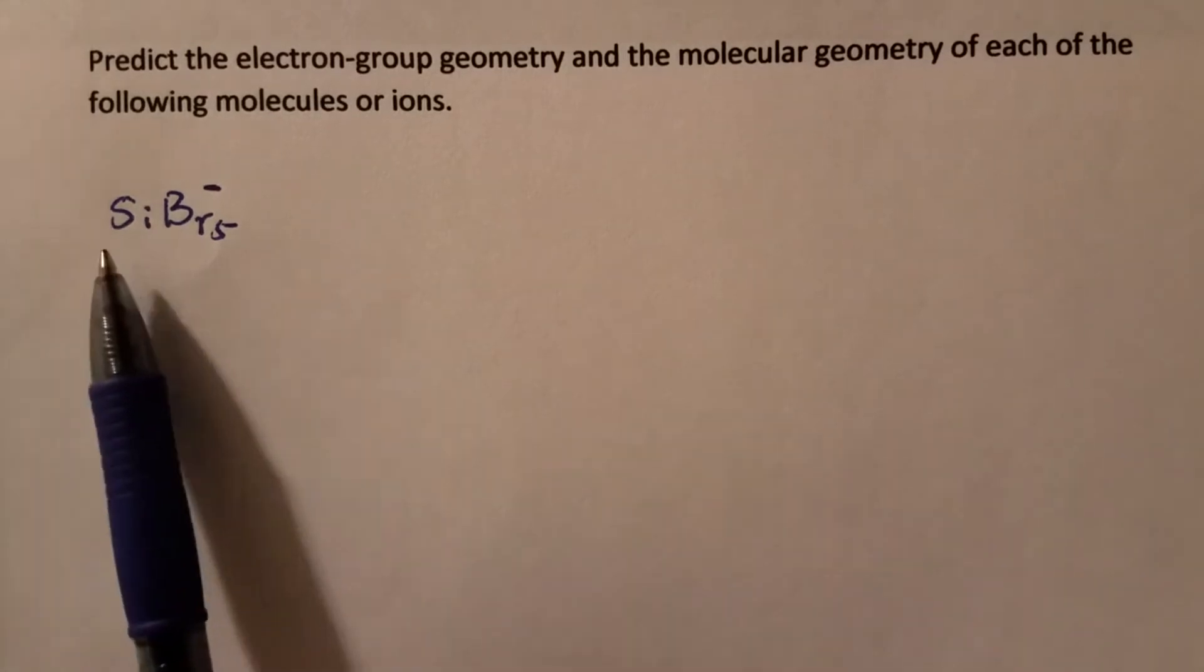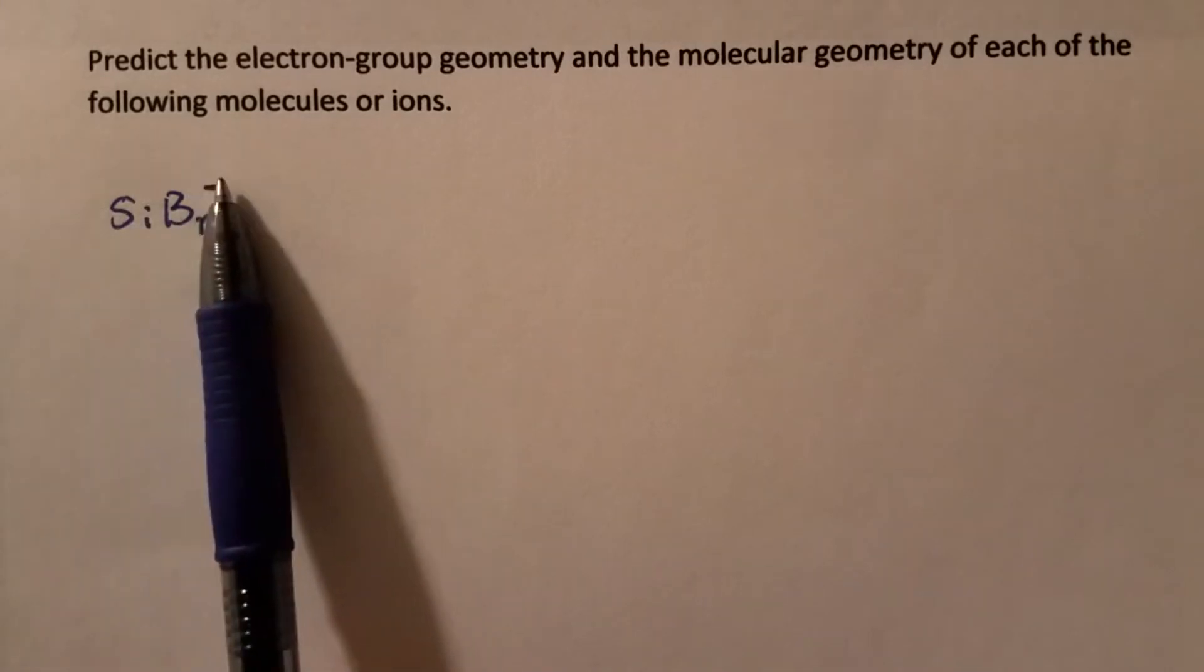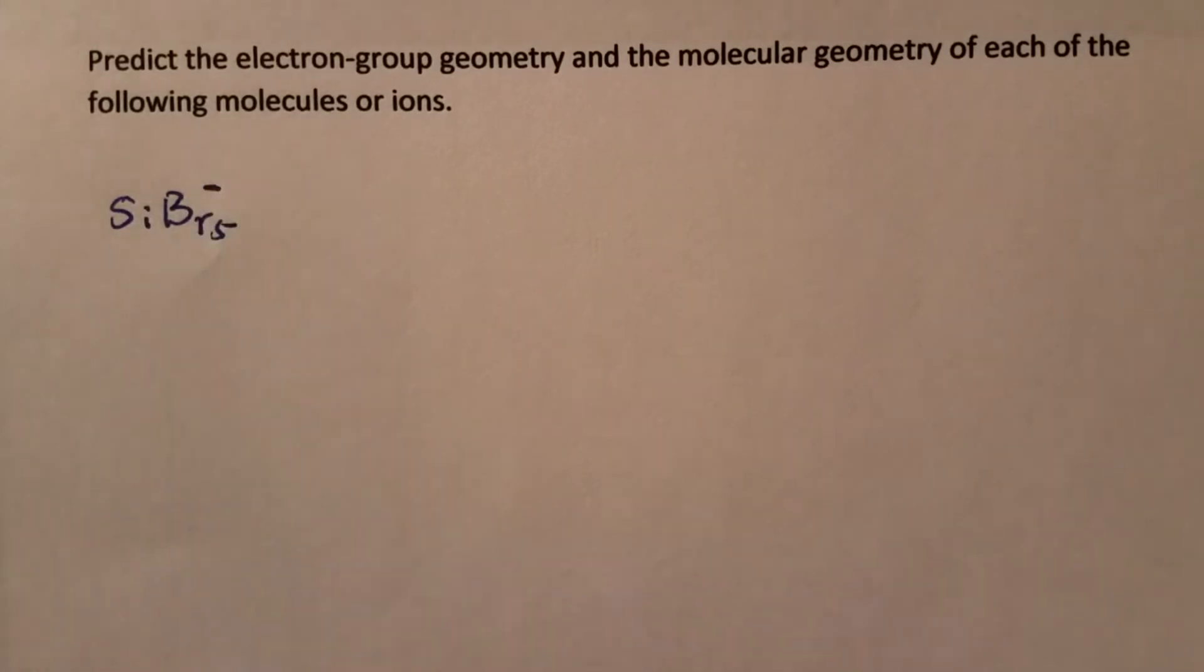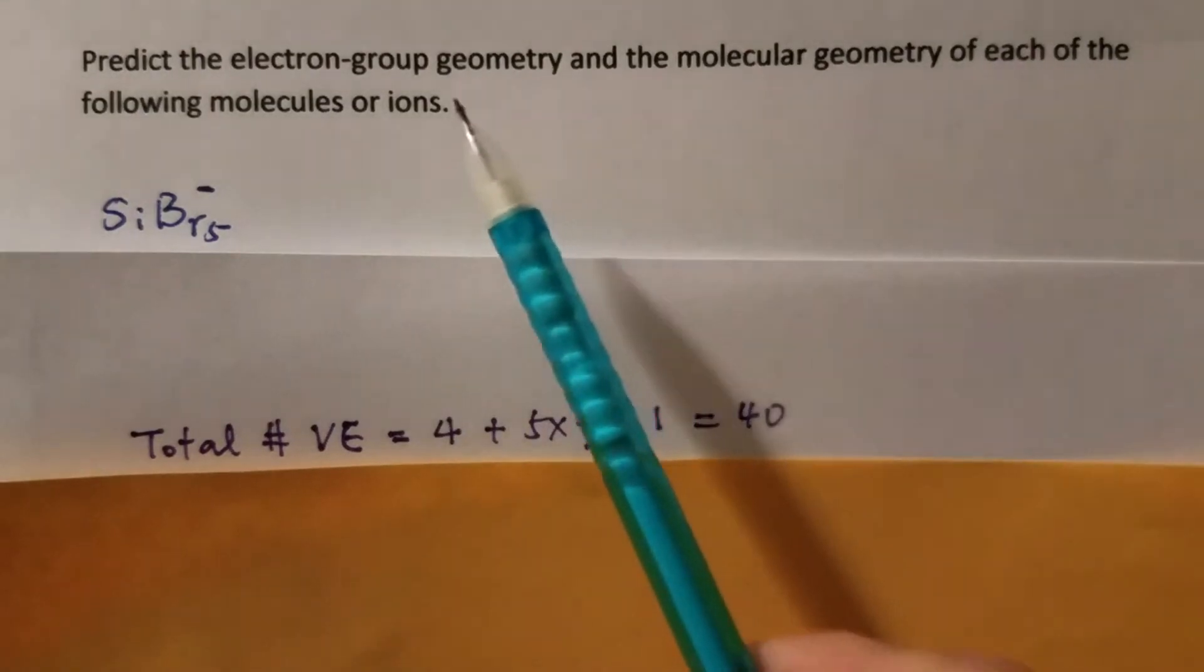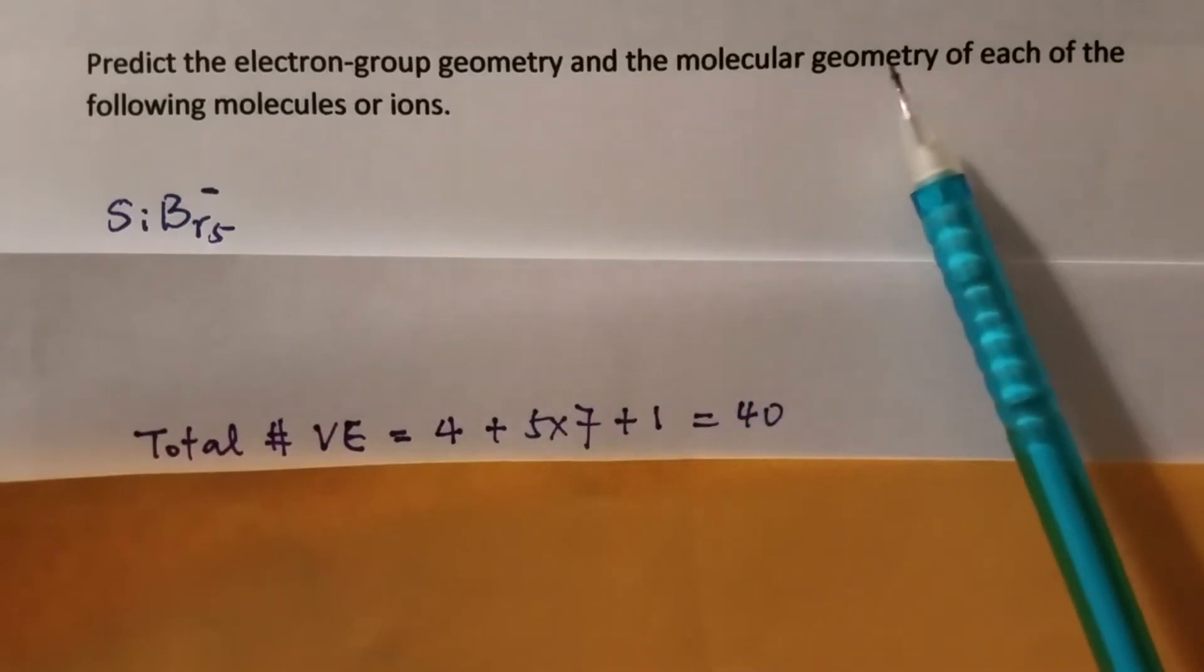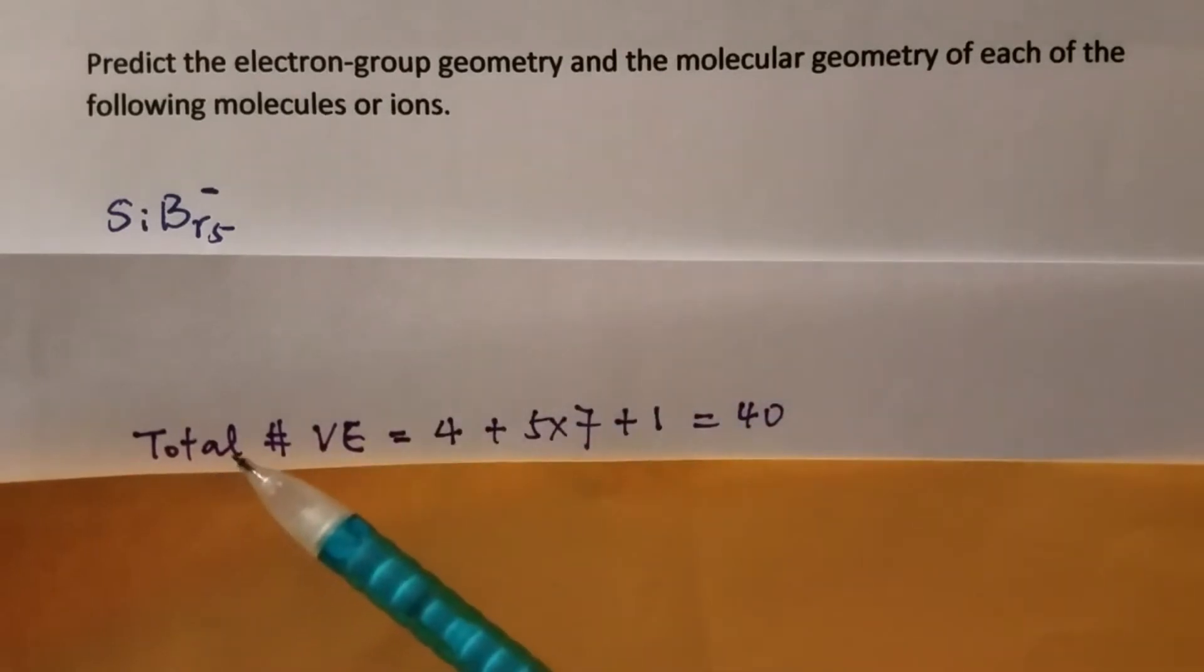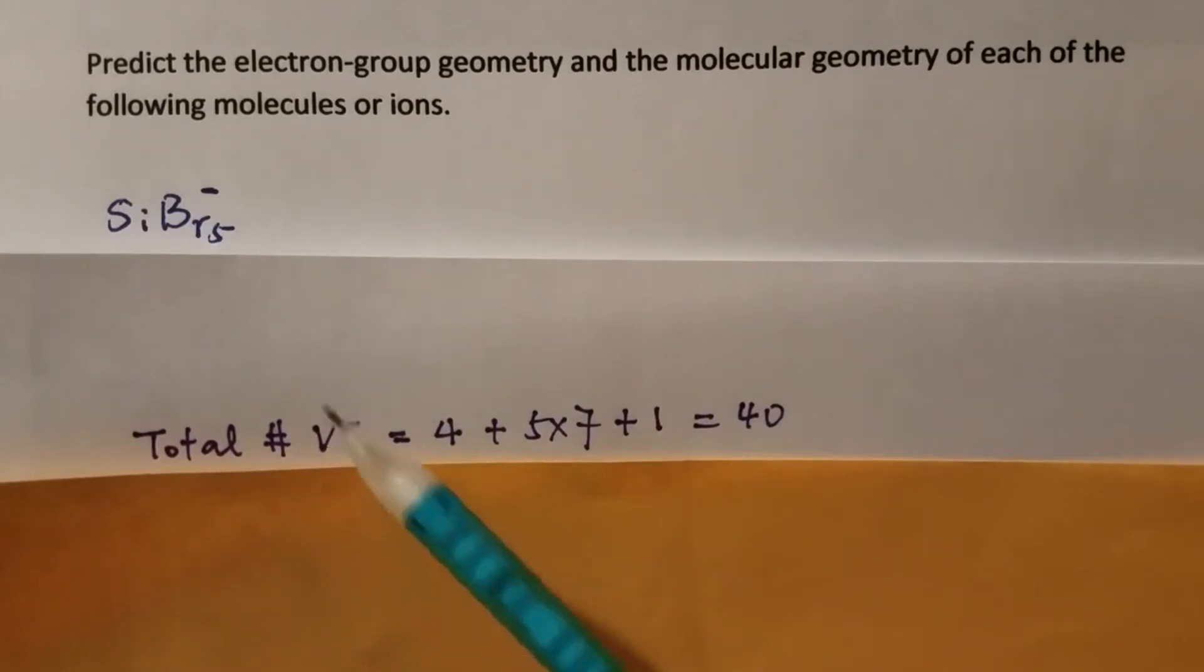This is a silicon pentabromide polyatomic ion. In order to find out the geometry, whether electron group geometry or molecular geometry, first we have to draw the Lewis structure of this polyatomic ion. In order to draw the Lewis structure, we have to find out the total number of valency electrons in this entire formula.